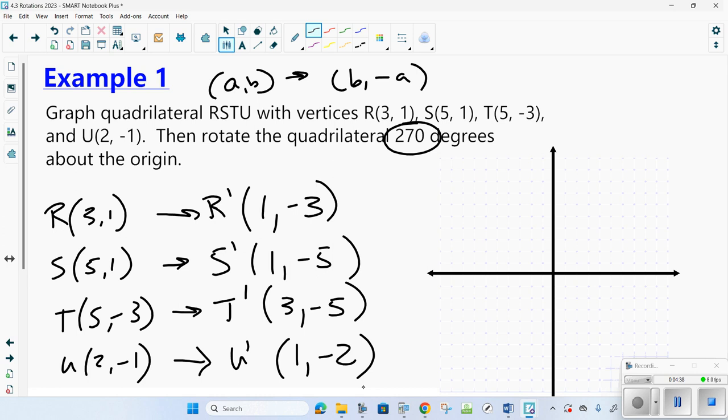So notice, I apologize, that one should be negative 1, negative 2. You don't change the B value, you do change the A value. Now I'm going to do each one in a different color. I'll do the original. So positive 3, positive 1, positive 5, positive 1, positive 5, negative 3, and positive 2, negative 1. So this is R, S, T, U.